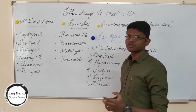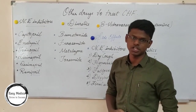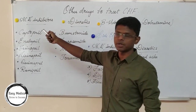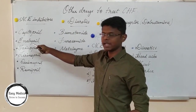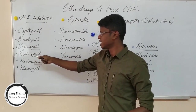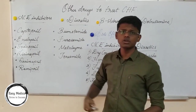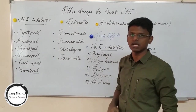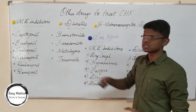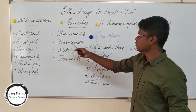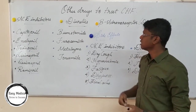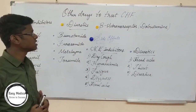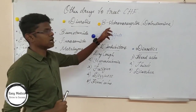The main drugs used to treat congestive heart failure are Digoxin and Digitoxin. Other drugs for CHF include ACE inhibitors such as captopril, enalapril, fosinopril, lisinopril, quinapril, and ramipril — these are also used as antihypertensive drugs. Diuretics used include Bumetanide, Furosemide, Metolazone, and Torsemide. The main drug used as an alternative to Digoxin is Dobutamine, which is a beta-adrenergic receptor agonist.